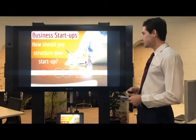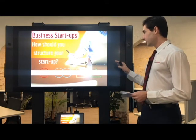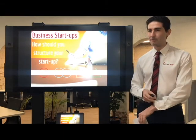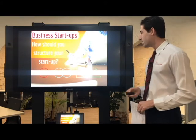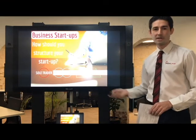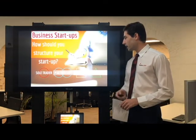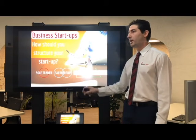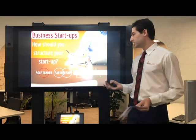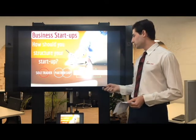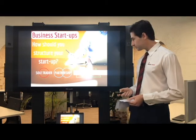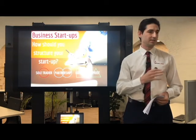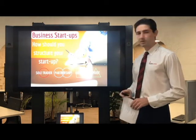There are four main structure options. First, a sole trader — where it's just you flying solo. Second, a partnership — where two or more people get together; this can include a partnership of other entities like companies or trusts. Third, a company. And fourth, a trust. We're going to run through each of these and some of the fundamentals, then talk about some of the pros and cons.